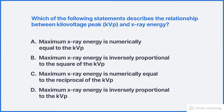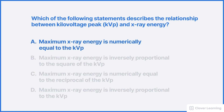Here's another practice question which goes a little deeper. Which of the following statements describes the relationship between kilovoltage peak and the x-ray energy? The correct answer is A — the maximum x-ray energy is numerically equal to the KVP. For example, if the tube potential is 100 KVP, the photons in the beam will have a maximum energy of 100 KEV. If the tube potential is 90 KVP, then the photons in the beam will have a maximum energy of 90 KEV.